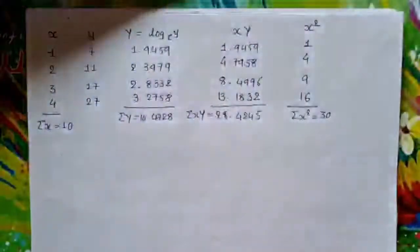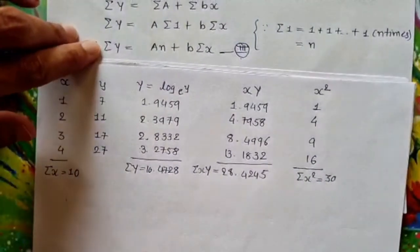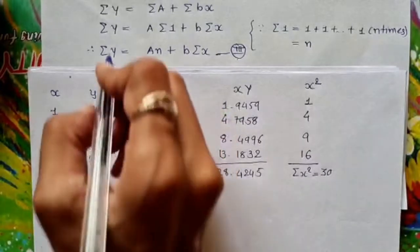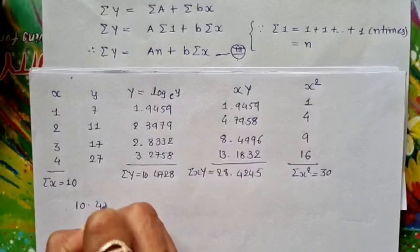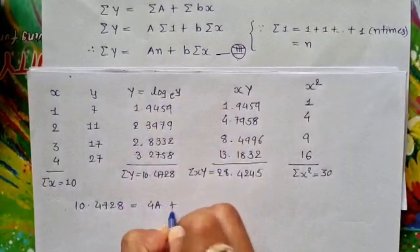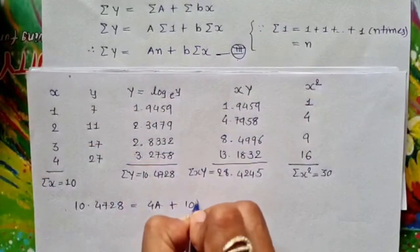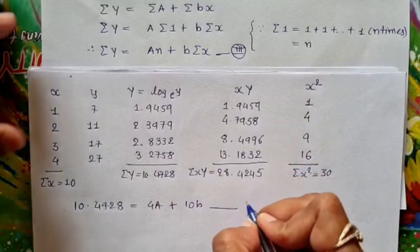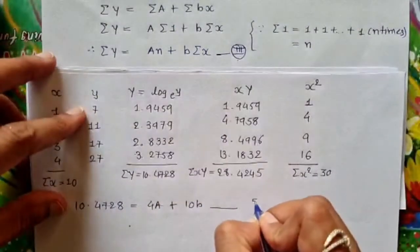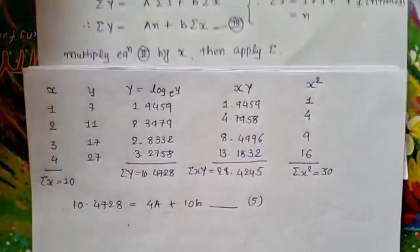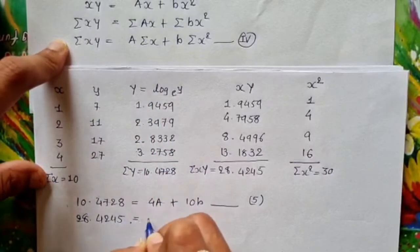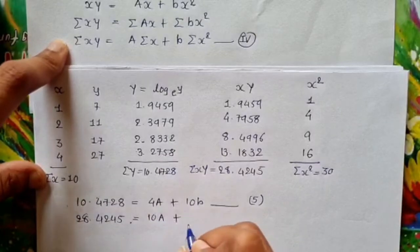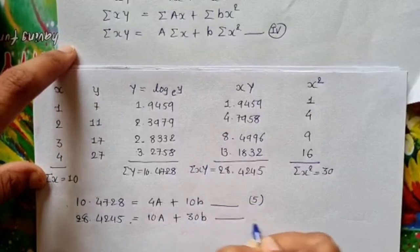Now putting these values into normal equation 3: 10.4728 = 4A + 10B, which is equation 5. And into normal equation 4: 28.4245 = 10A + 30B, which is equation 6.